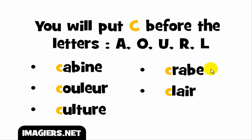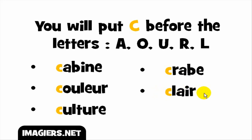Now if we combine C with R, C plus R gives you /k/ — crab, crab. And the last example: C plus L gives you /k/ as well — clé.